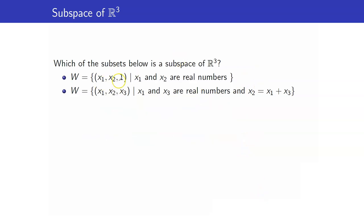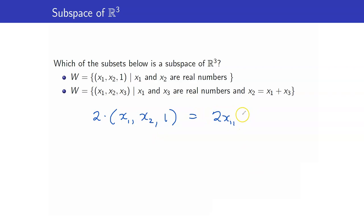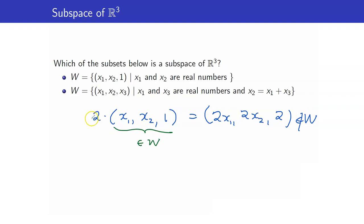Moreover, it is also not closed under scalar multiplication. If I multiply (x1, x2, 1) by 2, I get (2x1, 2x2, 2), which is not in W since the last coordinate is 2, not 1. So this is indeed not a subspace.